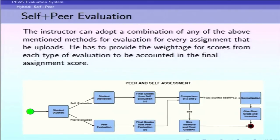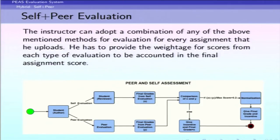Apart from using individual modules, the instructor also has the option to choose any combination of the four modules — for example, peer plus self, or autograde plus self-grading — and assign a particular weightage to each chosen module. The most important hybrid module is self plus peer evaluation, used when both grades and learning enhancement are important. In this case, assignments are forwarded to both the peer module and the students themselves for self-grading.